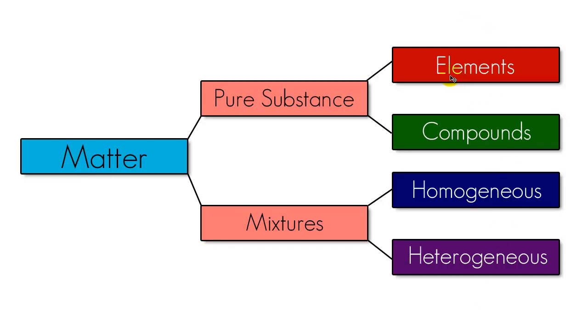An example of an element would be something like gold where all of the atoms are the same. An example of a compound would be something like water where you have two different types of atoms and we'll talk about atoms later on. Two different types of balls. Some hydrogen, some oxygen, that's what you get in order to make a compound. Both of these things are classified as pure substances by chemists. Not me, chemists. Blame them if you don't like it.